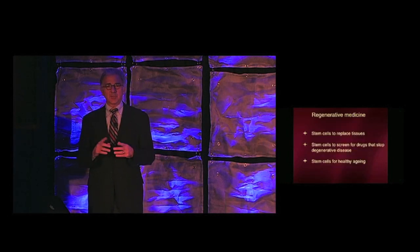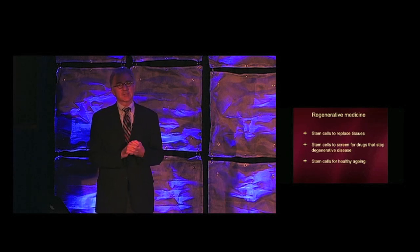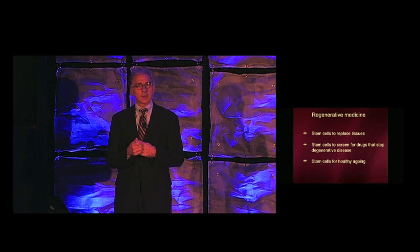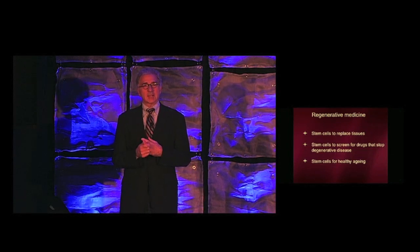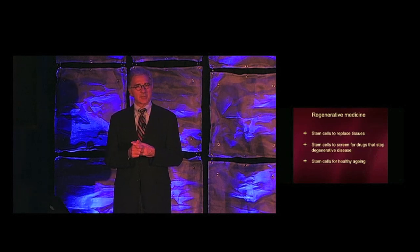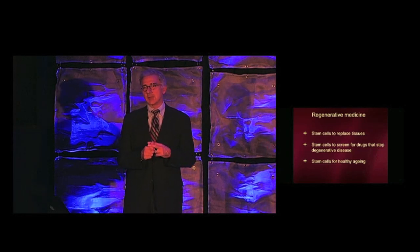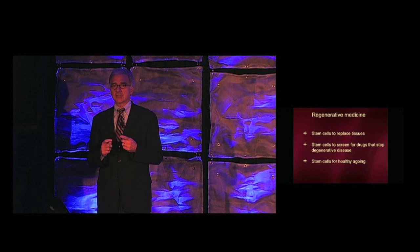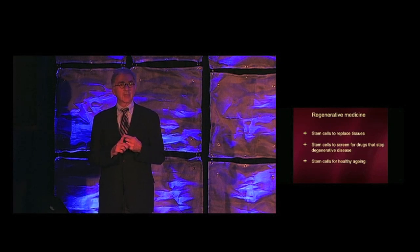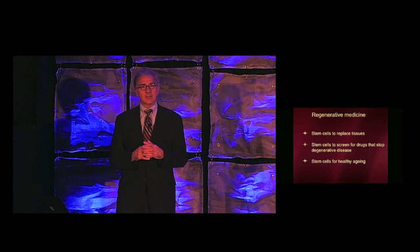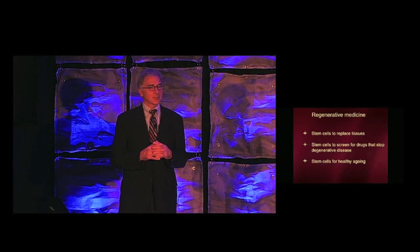These three stories will be first to show you examples where stem cells can be used to replace tissues, tissues that are lost in injury or by disease. Secondly, and maybe more interesting to those here in the pharmaceutical industry, I'm going to make the argument that using human stem cells to screen for drugs on human cells will change that industry, because it means no longer screening on rodent cells and no longer screening on the wrong cell type. Finally, I'll tell you about some exciting new work on stem cells for healthy aging.